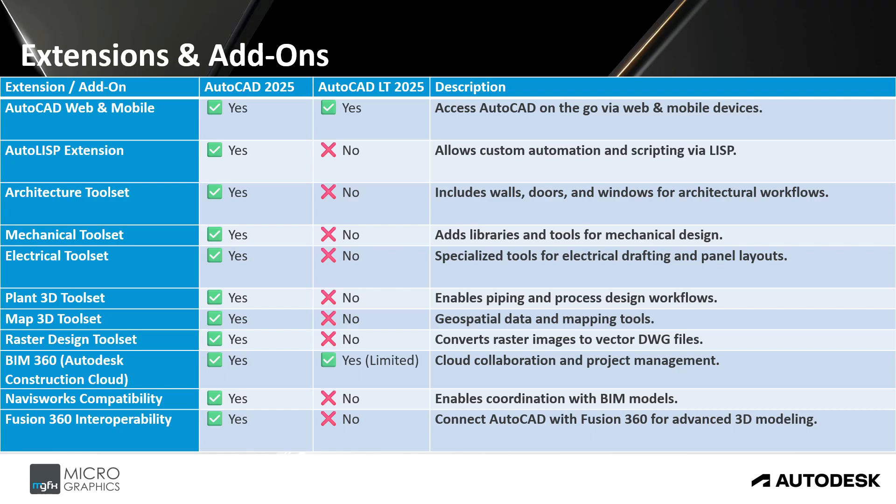For extensions and add-ons, the full version includes all the tool sets for architecture, mechanical, electrical, plant 3D, map 3D, raster design, and more. Whereas AutoCAD LT is limited to AutoCAD web and mobile functionality and the Construction Cloud with its limitations.